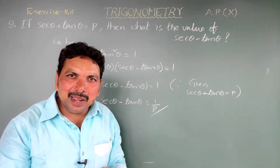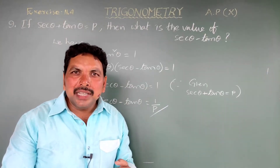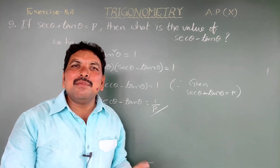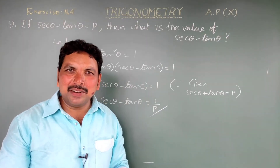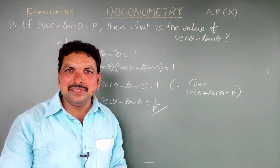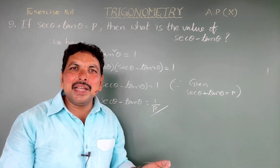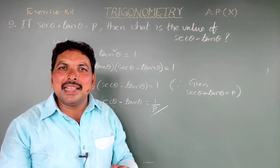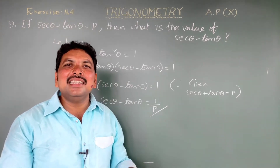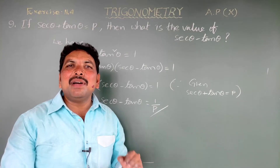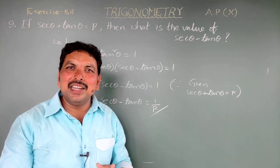If secant theta plus tan theta equals 2, then secant theta minus tan theta equals 1 by 2. If secant theta plus tan theta equals 1 by x, then secant theta minus tan theta equals x only.